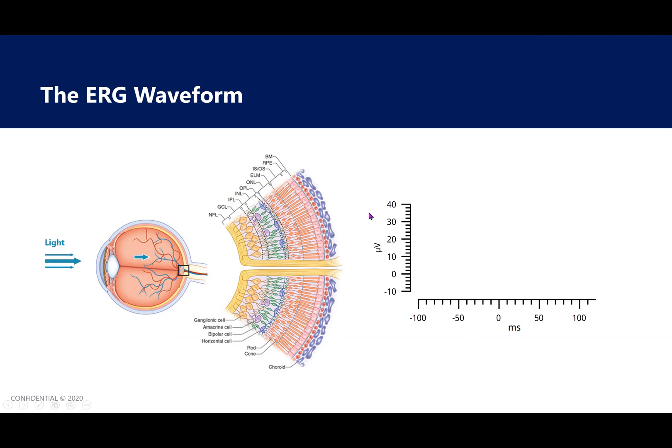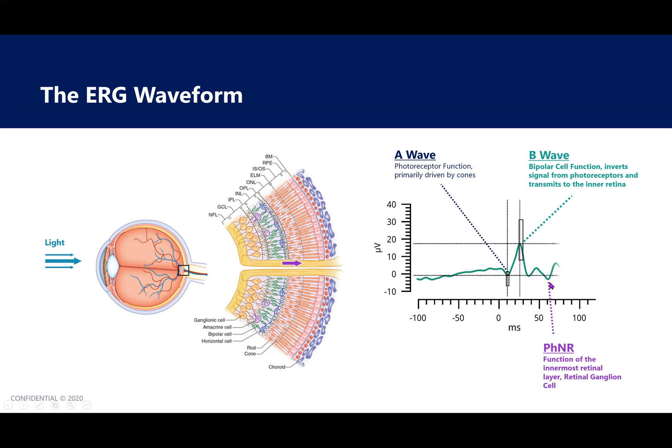As the light travels through the eye and through the different layers of the retina, it triggers an electrical response in the photoreceptors, which can be seen in the waveform as this first peak called the A wave. As the electrical response travels from the photoreceptors to the bipolar cells, you get this second peak called the B wave, and then as the electrical signal travels from the bipolar cells to the retinal ganglion cells, you get this third peak called the photopic negative response. Then as the electrical signal leaves the eye through the optic nerve, the waveform returns to zero.